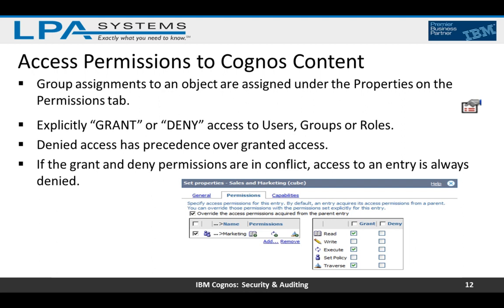Group assignments to an object are set under the properties on the Permissions tab. In the screenshot, we have the Sales and Marketing Cube — you can go to the Permissions tab and explicitly grant or deny access to users, groups, or roles. Denied access has precedence over granted access; if grant and deny permissions conflict, access is always denied. Use deny sparingly — most organizations don't need it, but it is available if the need arises.